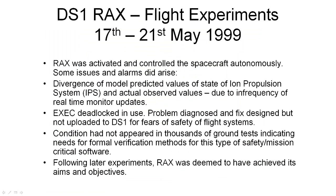The actual flight experiment for the Deep Space One Remote Agent Experiment took place between the 17th and 21st of May 1999. RACS was activated and controlled the Deep Space One spacecraft autonomously, but some issues and alarms did arise. There was a divergence between the predicted and actual observed values of the ion propulsion system state, determined to be due to the infrequency of real-time monitor updates. The executor also deadlocked. The problem was diagnosed and a fix designed quickly, but it was not uploaded to Deep Space One for fears of safety to the flight systems — a condition that hadn't appeared in thousands of ground tests, indicating the need for formal verification methods for safety and mission-critical software. Following later experiments, RACS was deemed to have achieved its aims and objectives.